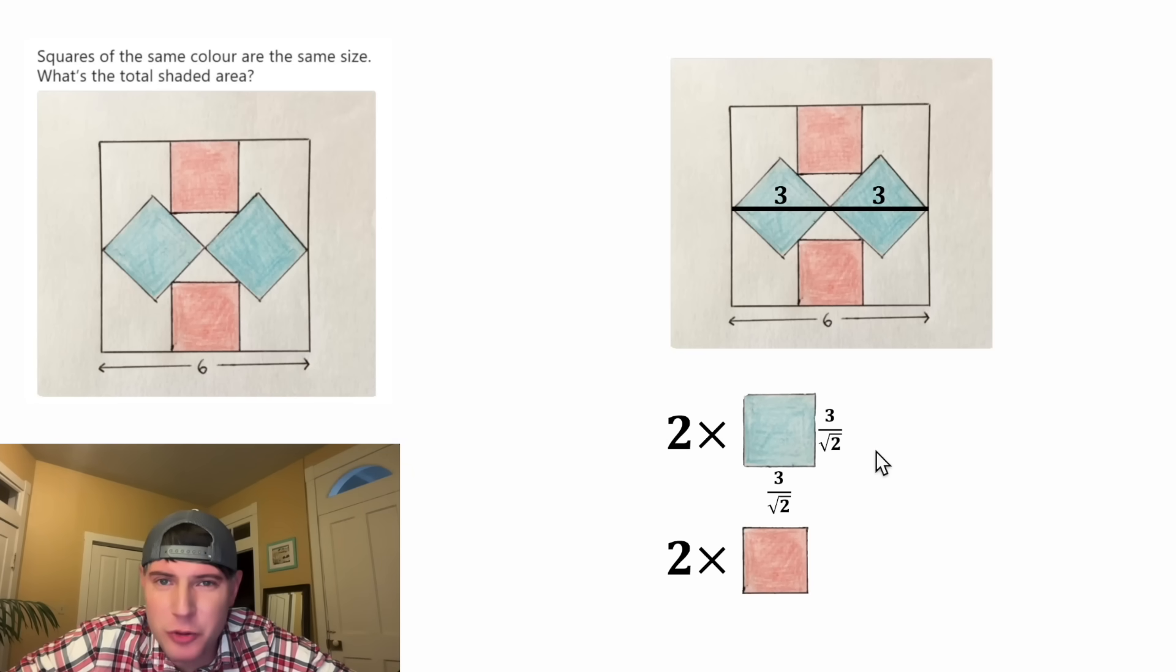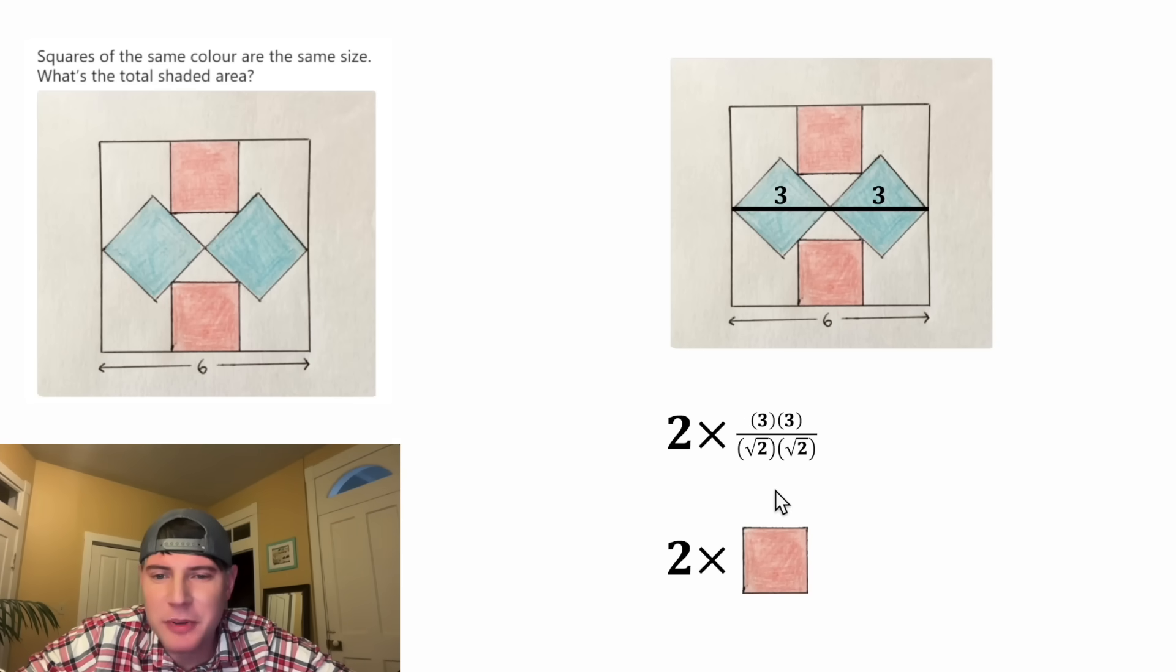And now from here, the area of a square is just the side length squared. So we can do this times this. Let's smush them together into a single fraction. Three times three is equal to nine. And in the denominator, root two times root two is equal to two.